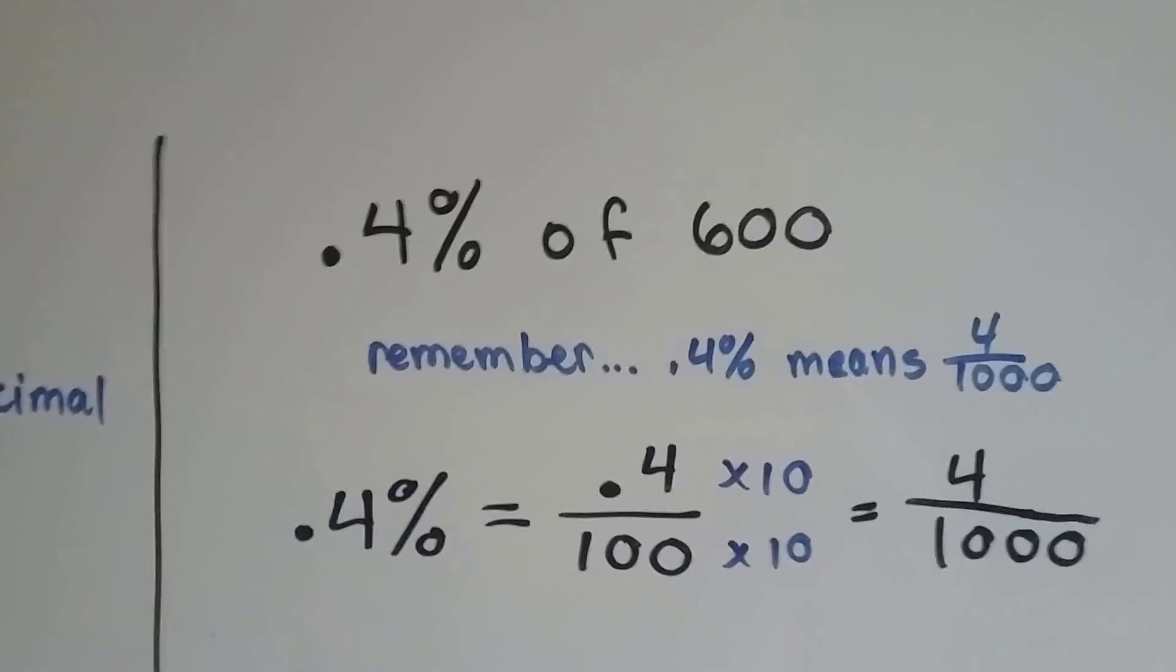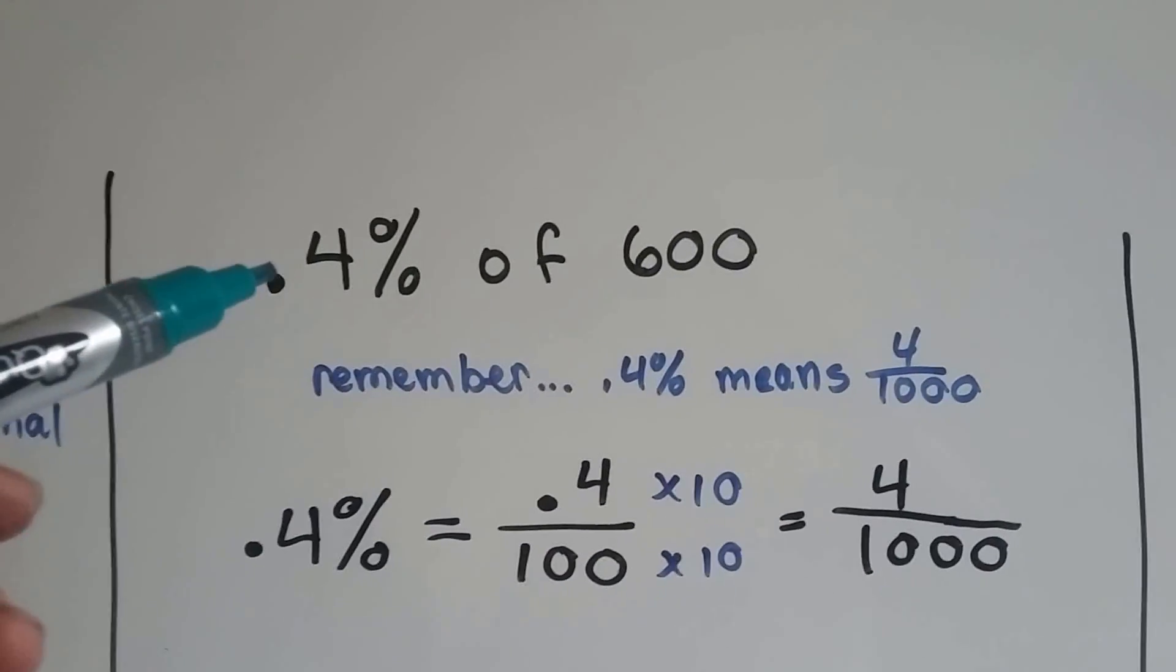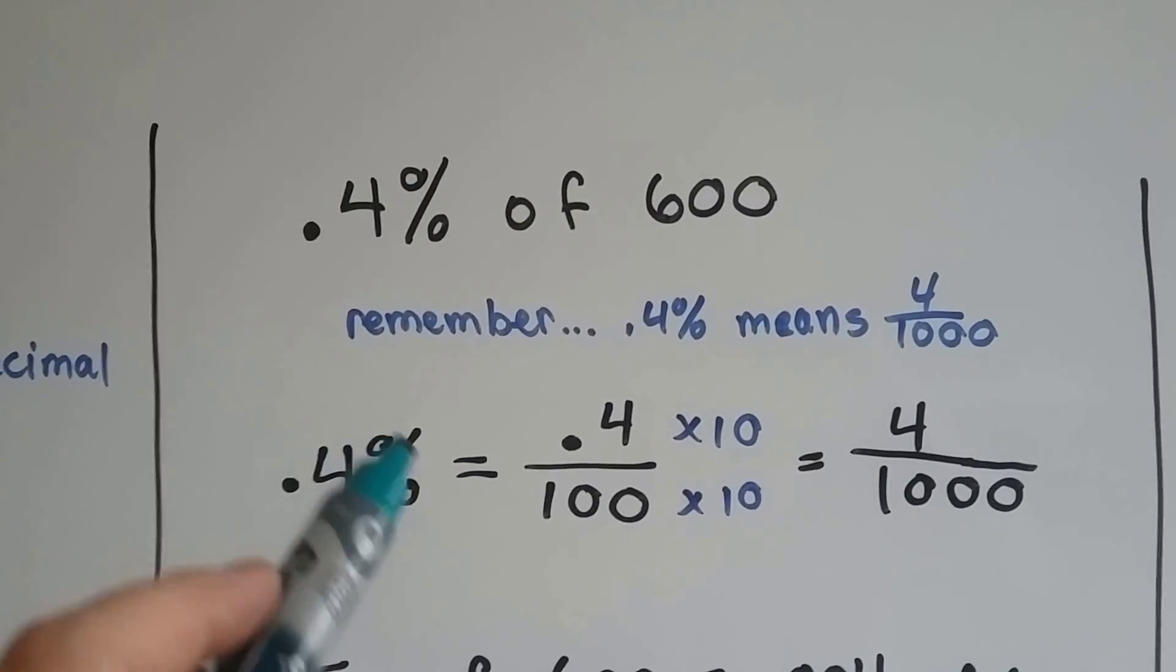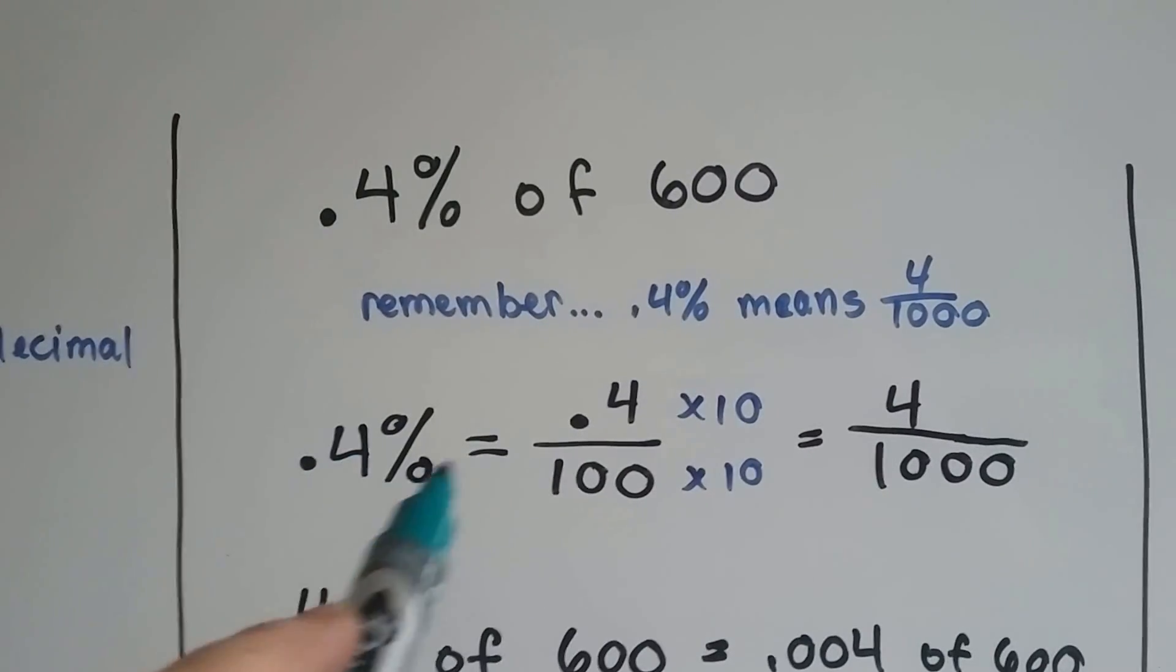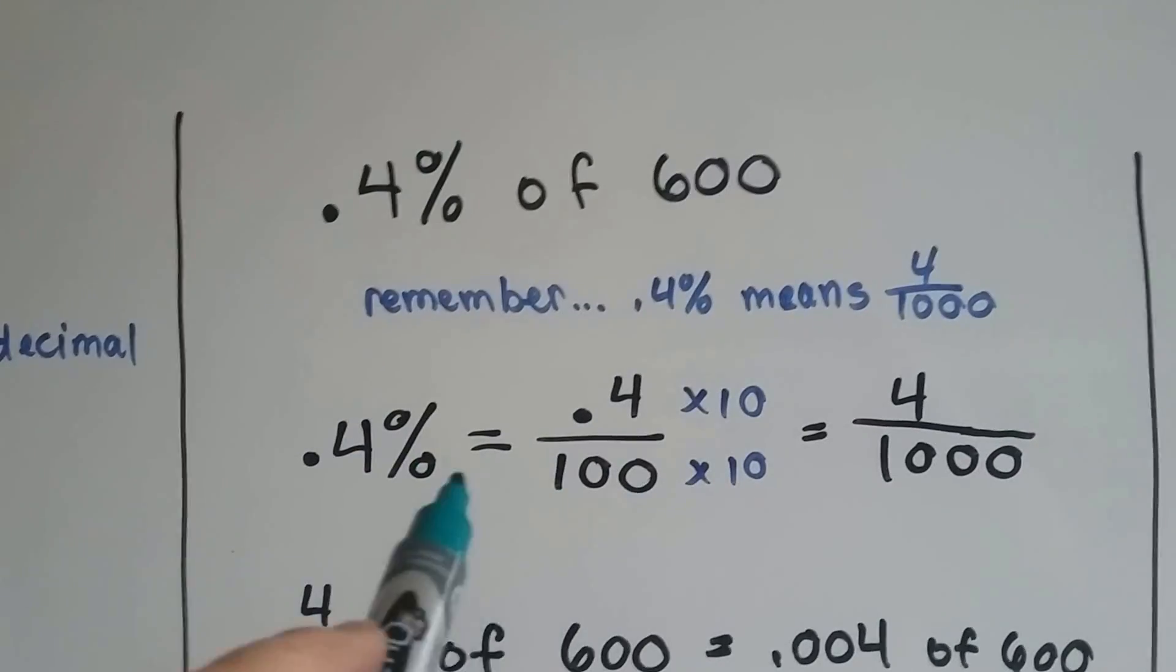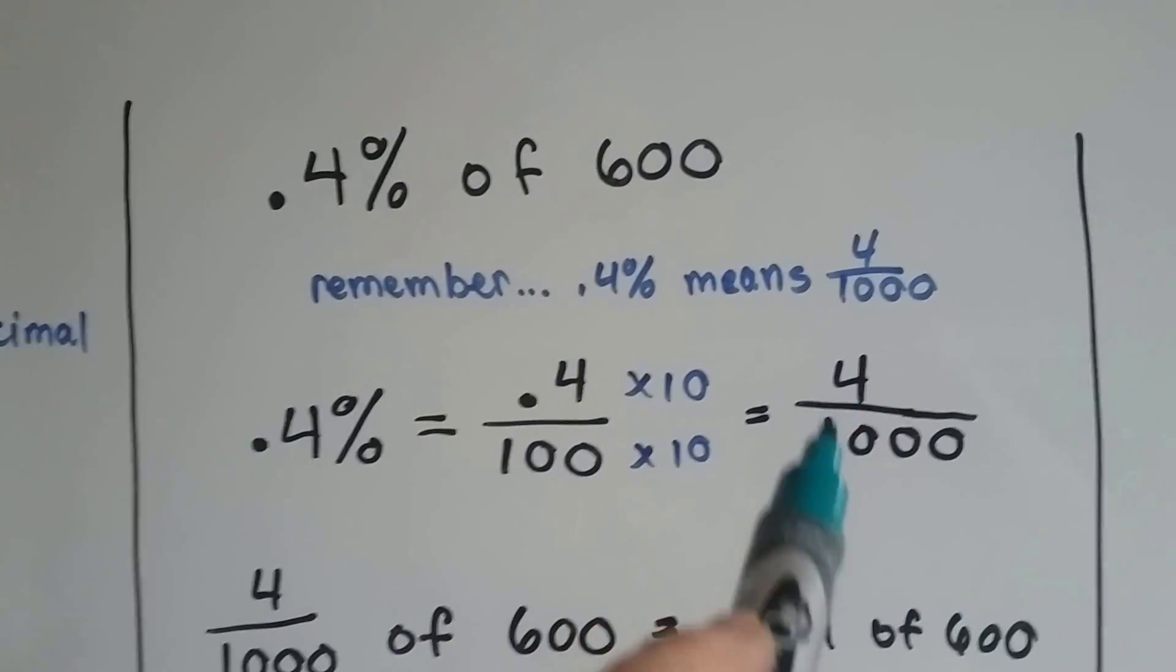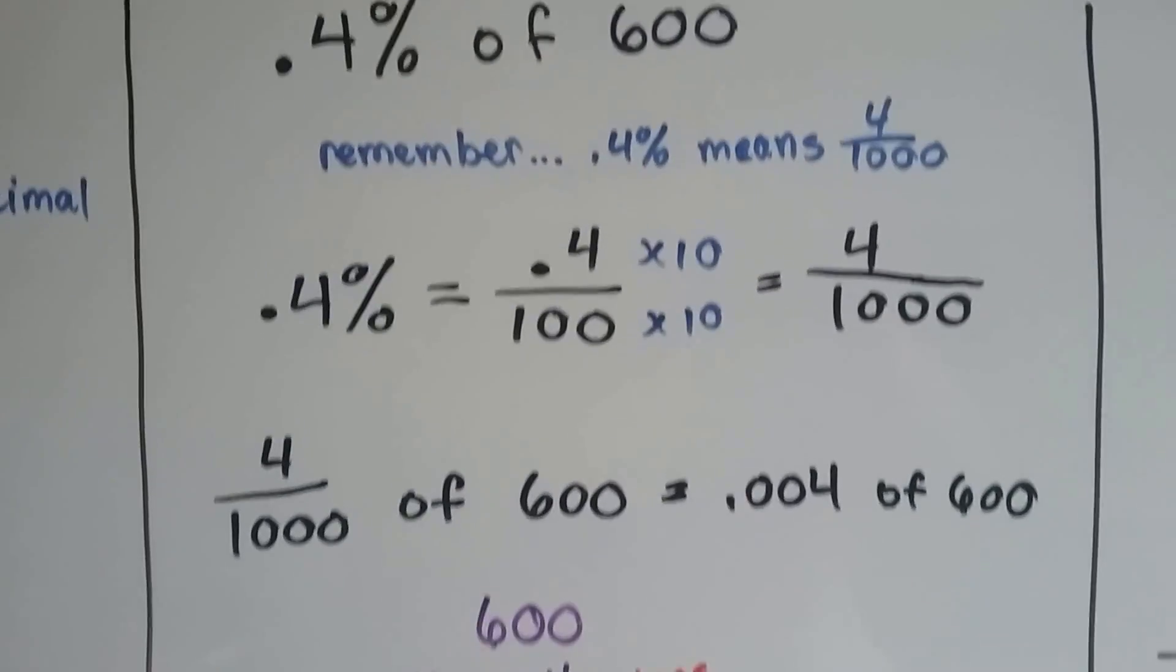What if there's a decimal point in our percentage? Well, do you remember in the other video we did, I think it was .5% and we turned it into a fraction? All we have to do is remember that whenever you see a percentage, whether there's a decimal point there or not, it means of 100. So we can put .4 over 100, because that's what percent means. And then to get rid of the decimal point, we just multiply both by 10, the .4 and the 100. That'll give us four thousandths. Now you know how we got the four thousandths there.